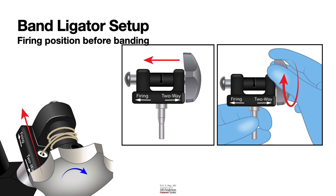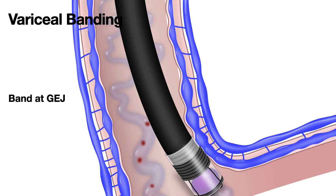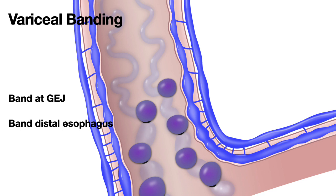Once the endoscopist pushes the scope to the GE junction, place the band ligator in the firing position before firing the bands. Rotate clockwise and the band gets released. It is important to start placing bands as close to the GE junction as possible — preferably at the Z-line or squamocolumnar junction. Focus subsequent bands in the lower 5 centimeters of the esophagus, where most perforators are, providing the blood supply that feeds those large veins.